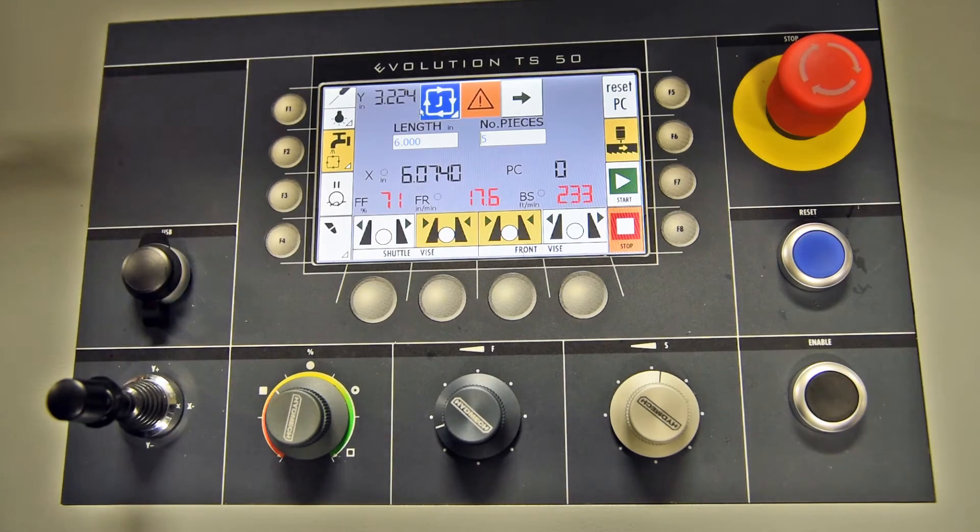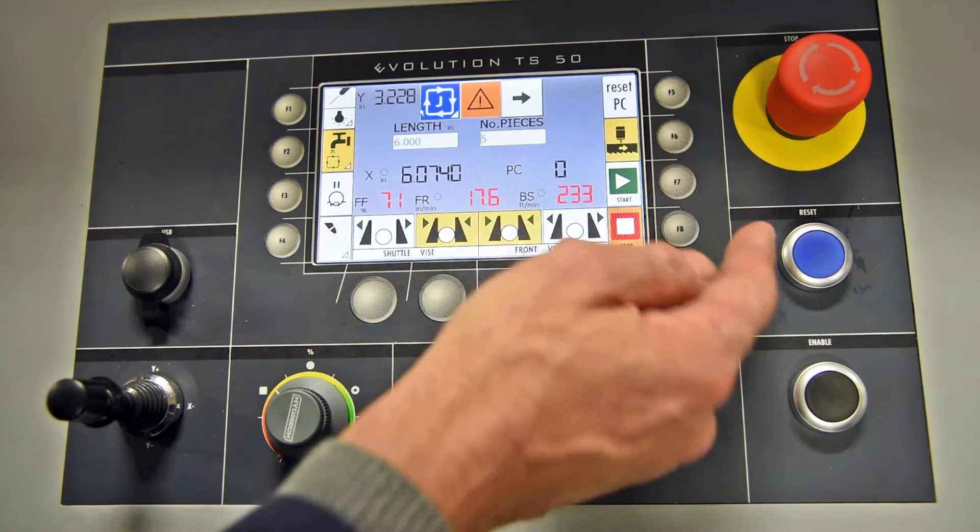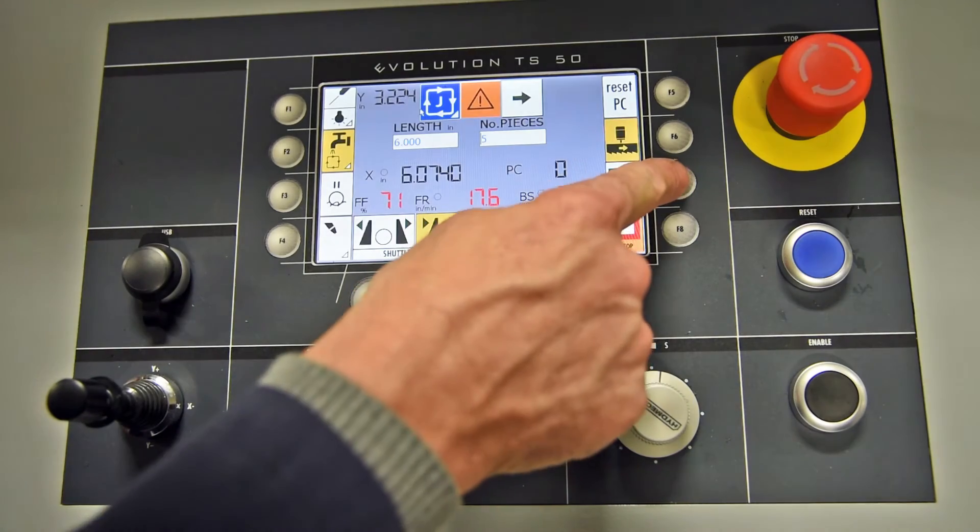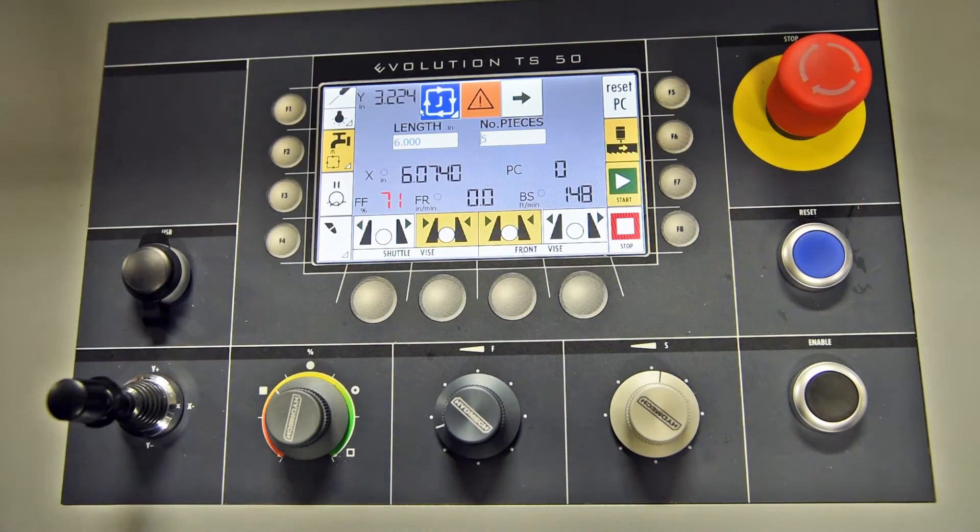In order to lock it in, then basically you would push your F6, you would start the cycle, and it memorizes the head up position now.